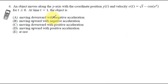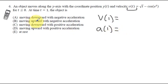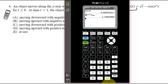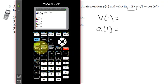Number 6 needs a calculator — let me show you a useful trick. An object moves along the y-axis; we have a formula for velocity, not position. We're only looking at values greater than zero. At time equals 1, we need to know: is the object moving up or down, and is acceleration positive or negative? So we just need the sign of v(1) and a(1). Go to Y= and type in the square root of t as Y1.